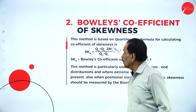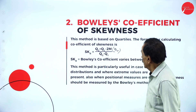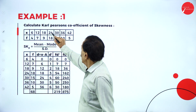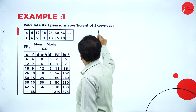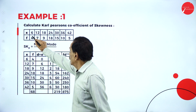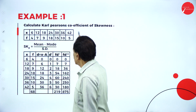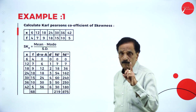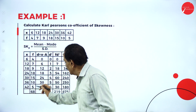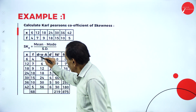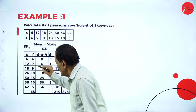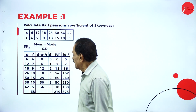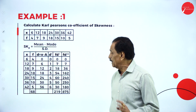We will move on to the problems now. First problem: calculate the Karl Pearson coefficient of skewness. They will give the X values and they will give the frequency. The first step is to add the cumulative frequency: 4, plus 7 is 11, 20, 38, 43, 53, 63, 63. This is the total number of frequencies.